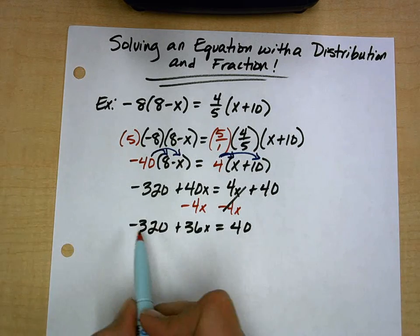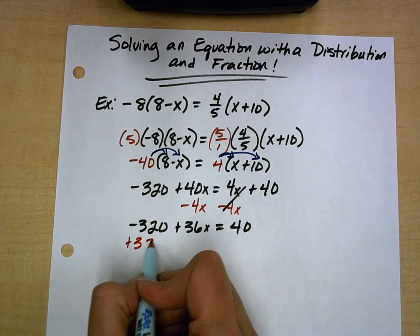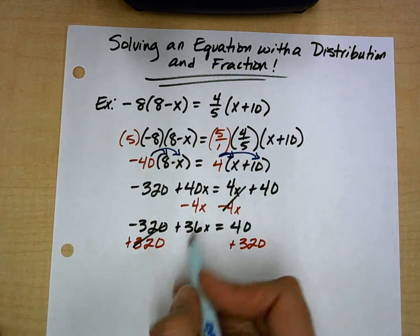I have my variable terms on the left, so I need to get my constants all over on the right-hand side, so I'm going to add 320 to both sides. These cancel.